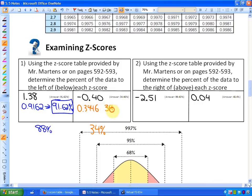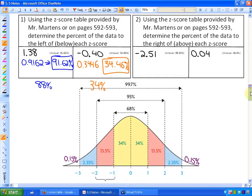Or, in other words, 34.46%. The next problem says, using the Z-score table provided by Mr. Martens or on pages 592-593, determine the percent of the data to the right or above each Z-score.